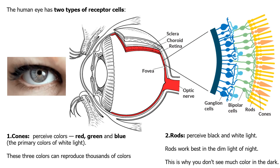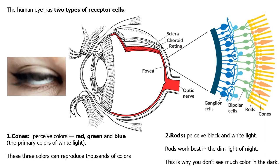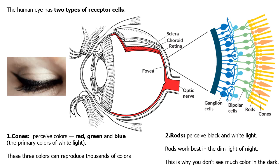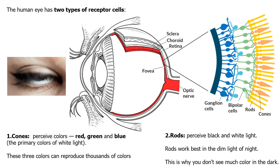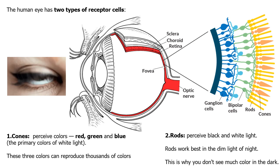Those are called cones and rods. The cones allow you to perceive RGB, which is red, green, and blue. These are the primary colors of white light, which means light from the sun. The rods in your eye allow you to perceive the frequencies of light and dark. Rods work best in the dim light of night. This is why you don't see much color in the dark.